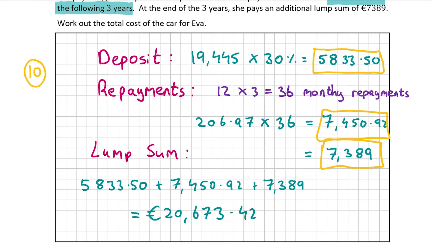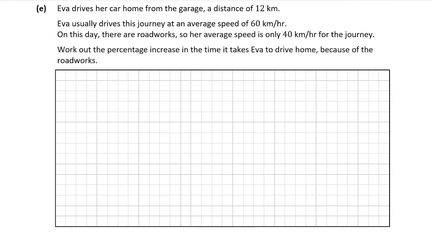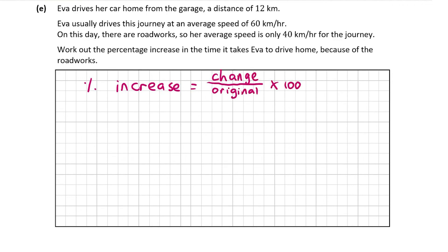Part E: Ava drives home from the garage — a distance of 12 kilometres. Normally she travels at 60 km/h, but today roadworks reduce her speed to 40 km/h. We need the percentage increase in journey time. The formula for time is distance divided by speed. The original time is 12 ÷ 60 = 0.2 hours, which is 12 minutes.